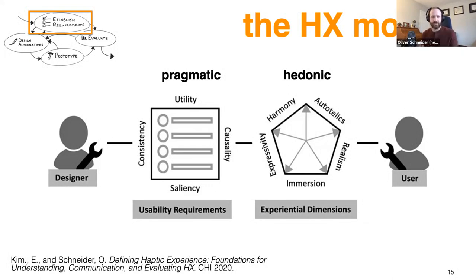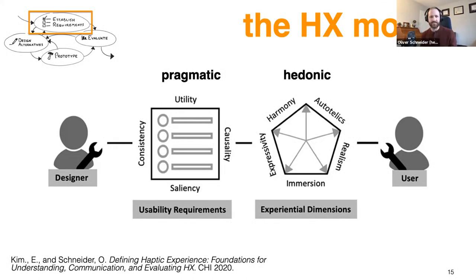For hedonic goals, we came up with five factors: harmony, autotelics, realism, immersion, and expressivity. Harmony is typically the most important — it means all the senses work together. The sense of touch is tightly related to vision and audio, and you want the sense of harmony when everything is working at the right time. Autotelics means it feels good in and of itself — like holding a quality mug, or touching silk and thinking, 'oh yeah, that feels good.' Realism and immersion are very important for VR and mixed reality systems.